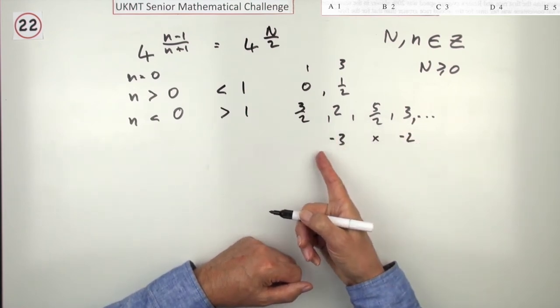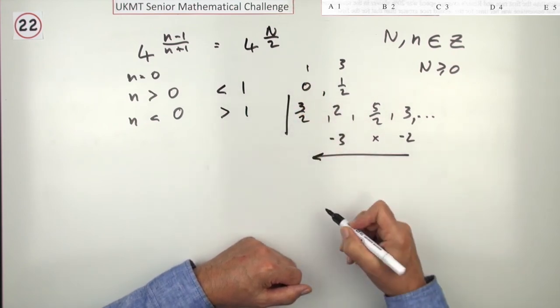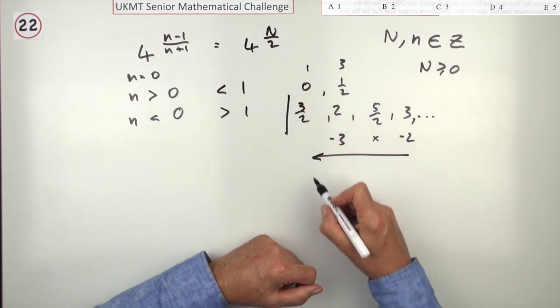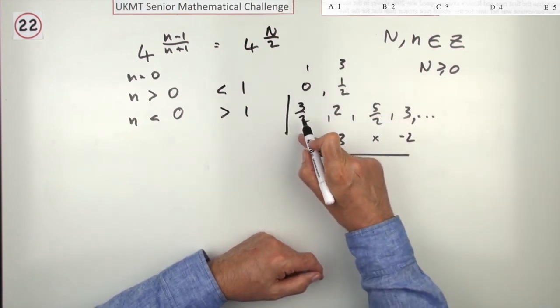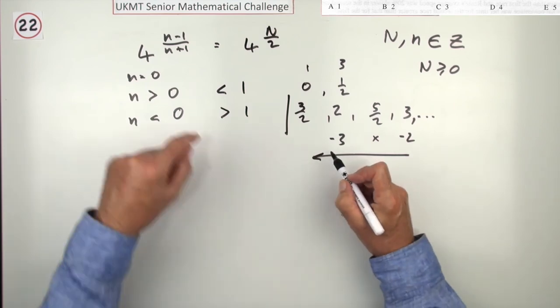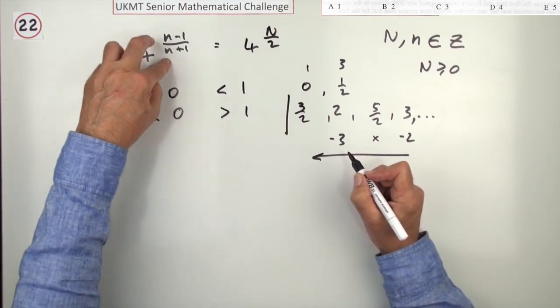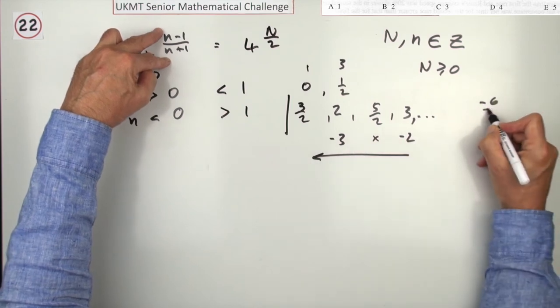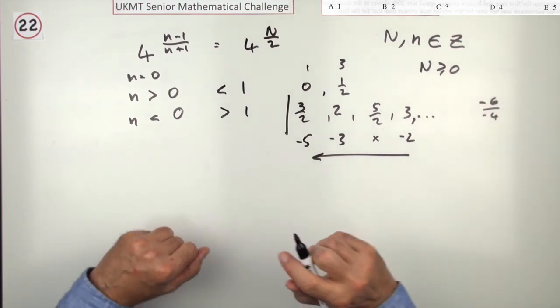But one thing you notice now is, these seem to be going this way and there's a limit there because it's got to be greater than 1. So, even without working this one out, I can see there's 1, 2, 3, 4, 5. If this works, if you can find one for this, well, the next one to try after negative 3 would be negative 5. Negative 5 gives a negative 6 over a negative 4, which is 3 upon 2. So, there you are. There's 5 of them. So, the answer's E.